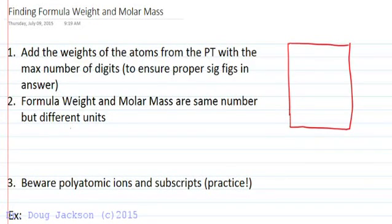Let's talk about finding formula weight and molar mass. All the information we need comes from the periodic table. For example, for lithium we have the atomic number of three, followed by the elemental symbol, followed by the average atomic mass of the element.